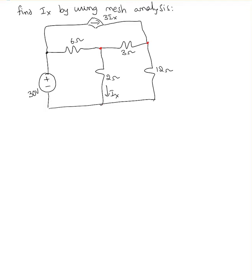At the same time, one of the mesh equations is going to be easier because I see a current source at the outer branch. So, step one: find all the loops and assign the loop currents. I'm going to take those as I1, I2, and I3.